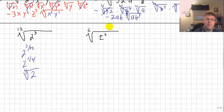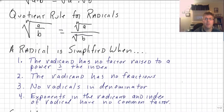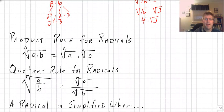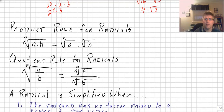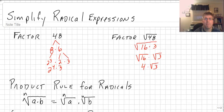I'll leave the sixth root of t squared for you to bring to class. That wraps up our sample problems applying the product and quotient rules for radicals and summarizing when a radical is simplified. We will see you in class.